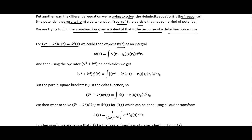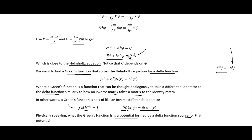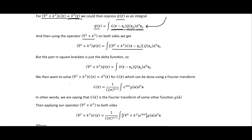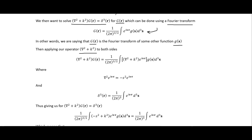We can express the wave function as an integral involving our Green's function and Q (the function defined earlier), integrated over three dimensions of R. Applying our operator to both sides, the part in square brackets is just the Delta function, so we can substitute it in. We want to solve for G(R), which can be done using a Fourier transform — saying that G(R) is the Fourier transform of some function G(S).